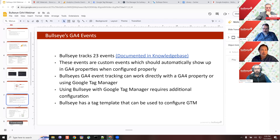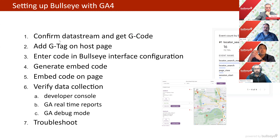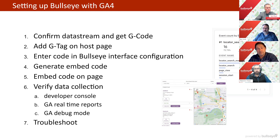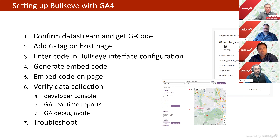The high-level steps are: go to Google Analytics, confirm there's a data stream running and get the G code. Add that code to the host page that is hosting the iframe. Then take that code and enter it into the Bullseye interface configuration. Generate the embed code, put that embed code on the page, and assuming you've done all of that correctly, it should be working. You'll be able to verify data collection in a couple of ways: in the developer console, in Google Analytics real-time reports, and if you've set it up, in Google Analytics debug mode.